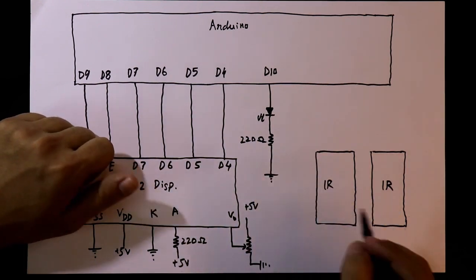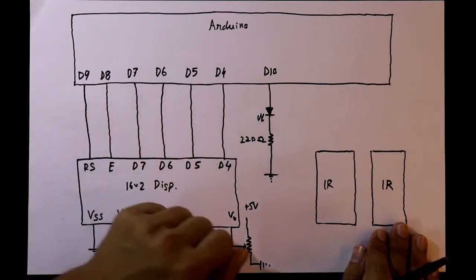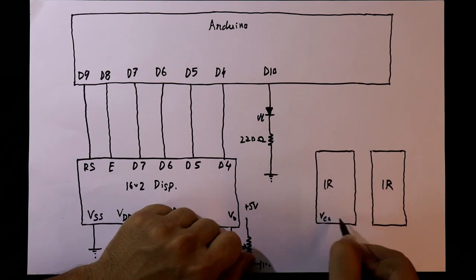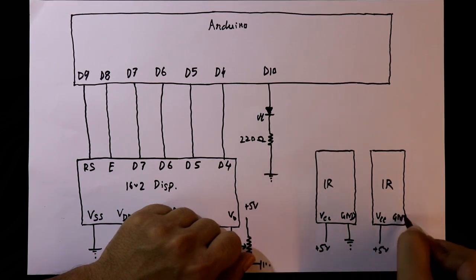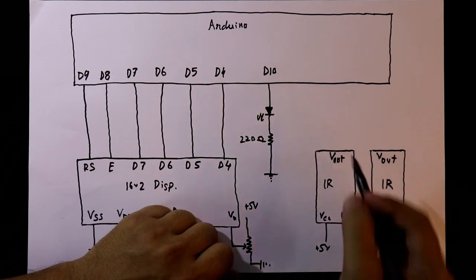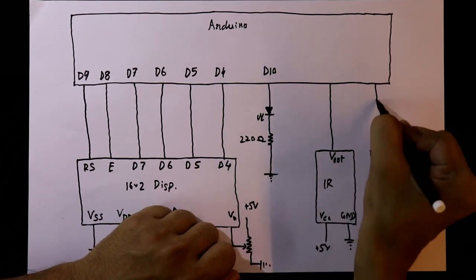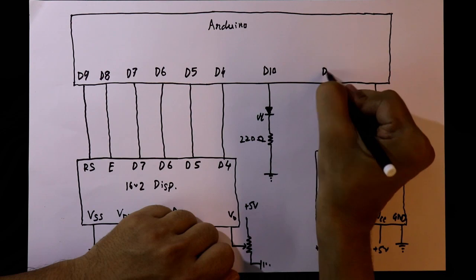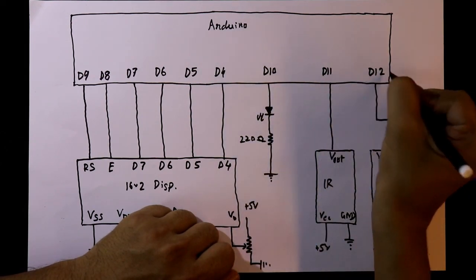The IR sensor, it has three pins. VCC, it should be connected to the plus 5V. Ground will be connected to the ground. And the Vout pin. These two pins will be connected to the Arduino. It is D11 and D12.